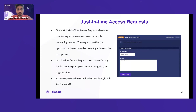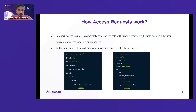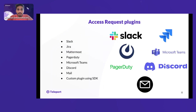Consider a P0 incident where an engineer needs to jump on a production host to debug issues. They can use this just-in-time access request feature to ask for a role or resource access. A security engineer can review those requests and, once approved, the engineer can fix the issue in a short period of time. Teleport is completely based on roles assigned to users — that decides whether they can request a role or resource, and review privileges are also role-based.